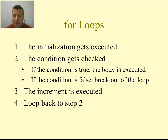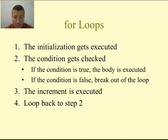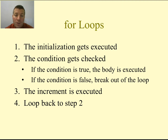Here is the flow of execution of a for loop. First, the initialization gets executed. Then the condition gets checked — if true, we execute the body; if false, we break out of the loop. After executing the body, we increment, then loop back up to check the condition again. We will never go back to the initialization after the first time — it executes only once. We check the condition after each increment and continue this process until the condition becomes false, at which point we break out and execute the very next line of code immediately following the loop.